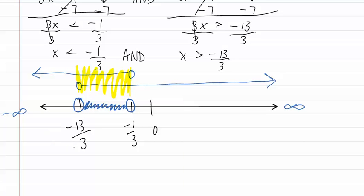So we have an open dot at each end and we fill in the space in between. Then we write our interval notation, which is parentheses, negative thirteen-thirds, comma, negative one-third, parentheses, and this is our answer.